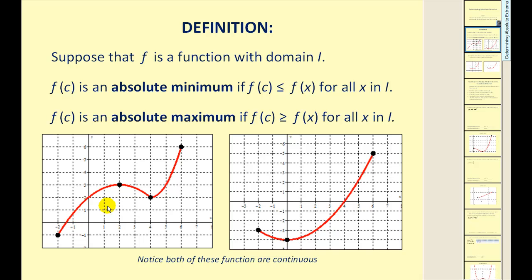If we consider this function on this interval, this is the obvious high point, therefore this y value is going to be the absolute max. This is the obvious low point on the graph on this interval, therefore this y value is the absolute min. Now you may think this point over here might be an absolute minimum — it is a relative minimum because it is a low point. However, it's not the lowest point or the smallest y value on the given interval, therefore it's not an absolute minimum.